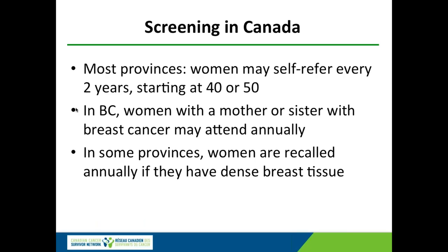Even the Canadian and US task forces agree that screening annually starting at 40 would save the most lives, but they think it's more important to spare women the anxiety of a recall. In most provinces, women can self-refer every two years beginning at 40 or 50, depending on the province. The flaw in only letting women go annually if they have a mother or sister with breast cancer — remember that 75% of women who get breast cancer have no family history, so you're only letting some of the women destined to get breast cancer have the opportunity for early detection.